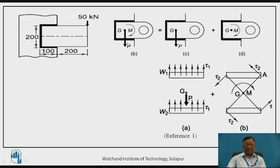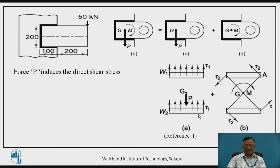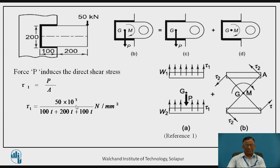The eccentric load is replaced by a direct force P and a couple M. The direct force P induces direct shear stress τ1 uniformly throughout the weld section: τ1 = P/A. P is the applied load of 50 kN, and the total throat area of the C-section is (100T + 200T + 100T), giving τ1 = 125/T N/mm².